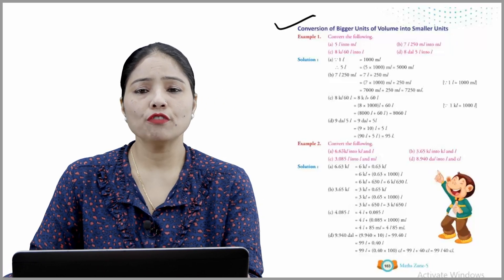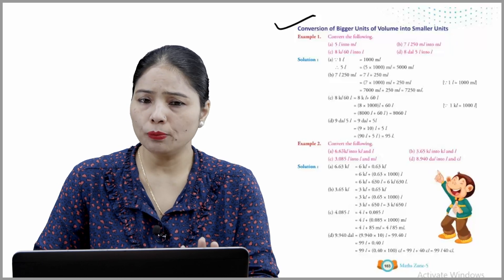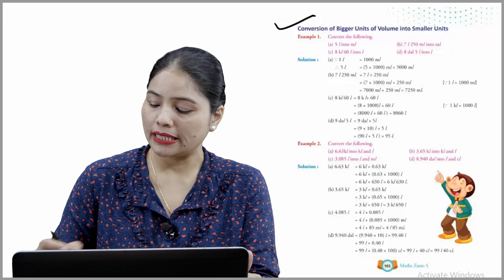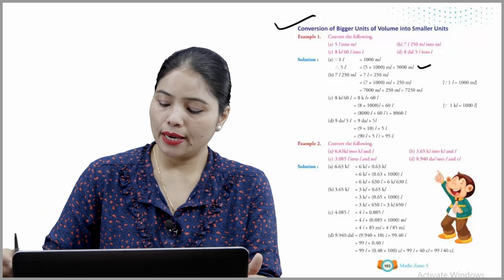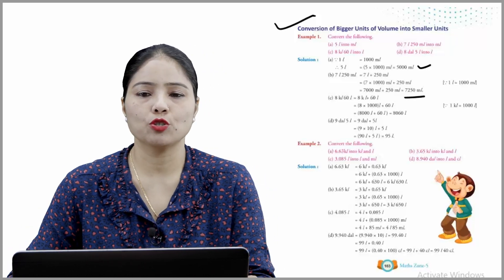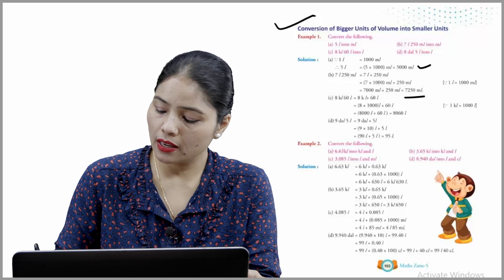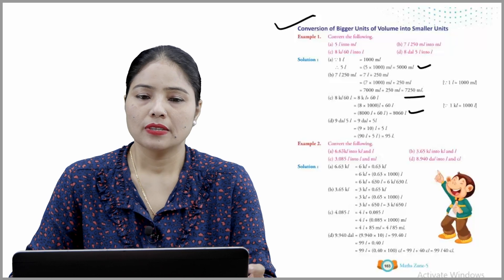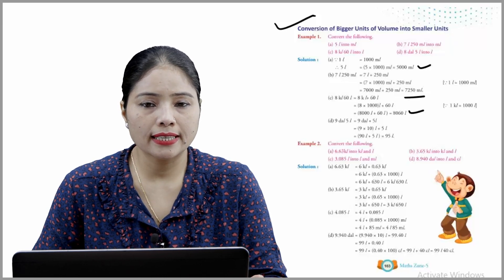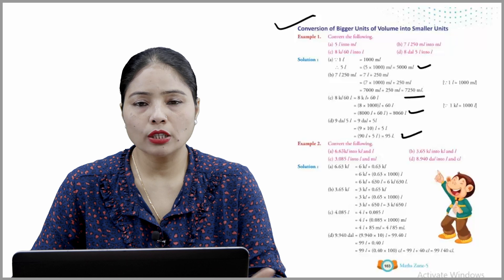Conversion of bigger units of volume into smaller units. Example 1 — convert the following. 5 litres into millilitres: multiply by 1000, answer = 5000 mL. Part B: 7 litres 250 mL — 7 × 1000 = 7000, plus 250 = 7250 mL. Part C: 8 kilolitres 60 litres — 8 × 1000 = 8000, plus 60 = 8060 litres. Part D: 9 DAL 5 L = 9 × 10 + 5 = 95 litres.